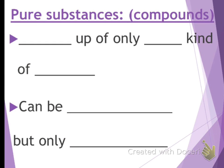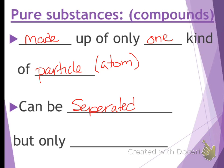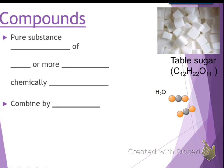Sometimes you have pure substances that are compounds. And what that means is they're made up of only one kind of particle. But they can be separated, but only chemically. So, for example, if we are talking about water, water is always made up of hydrogen and oxygen. It's always made up of two hydrogens and one oxygen. And it's still considered a pure substance because it's those two without anything else.